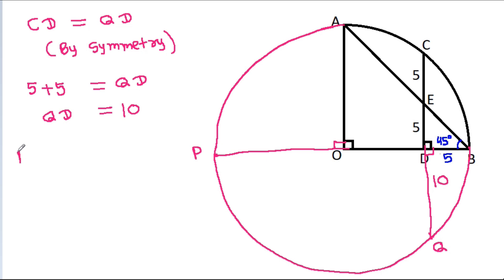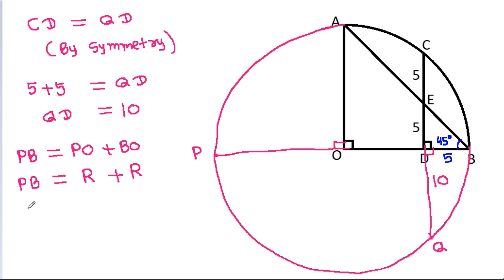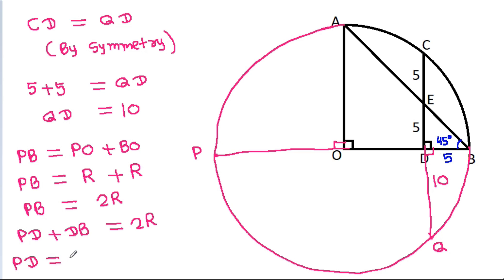Here, PB equals PO plus BO. Since PO and BO are each a radius, PB equals 2R. So PD equals 2R minus DB, which equals 2R minus 5.